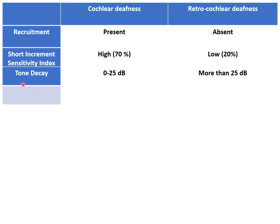Another test is tone decay, which is a measure of nerve fatigue. Normally a person can hear a tone continuously for 60 seconds. But if the patient has any retro-cochlear pathology or nerve fatigue, they stop hearing earlier. A decay of more than 25 dB indicates retro-cochlear deafness due to nerve fatigue. A decay of 0 to 25 dB is generally seen with cochlear deafness.